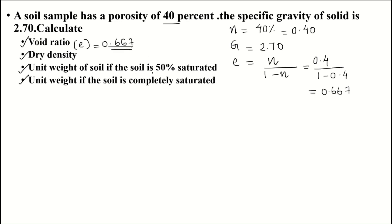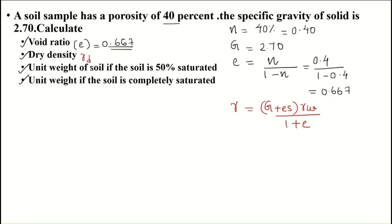Next, we need to find out the dry density. For finding out unit weight gamma, we have the equation: gamma = (G + e·S) · γ_w / (1 + e). We need to calculate dry density, that is gamma_d.